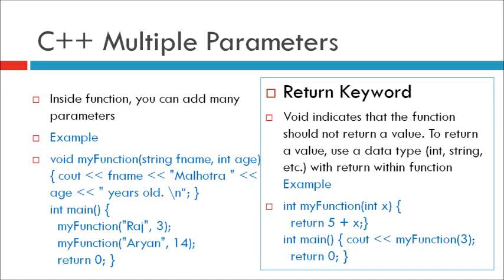Next statement in the body of this function is cout fname Malhotra, age years old. In main function, MyFunction first string is Raj comma 3. Next, MyFunction Aryan comma 40, return 0.